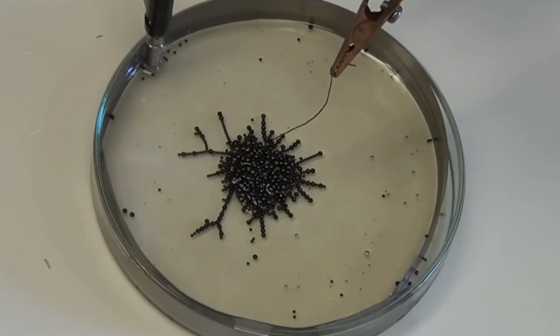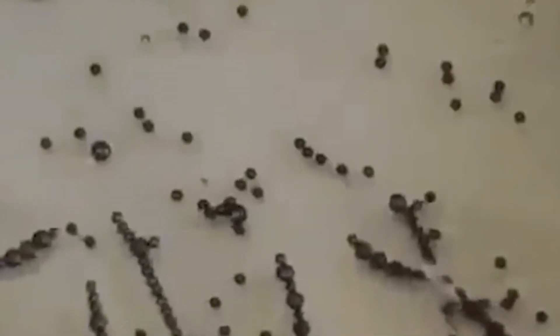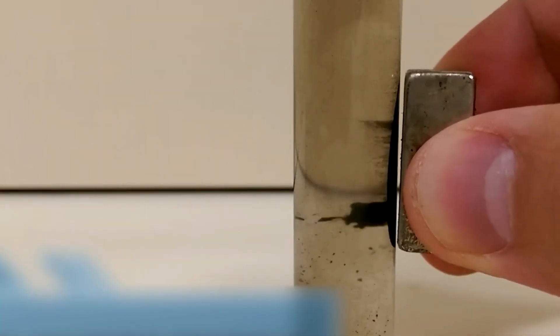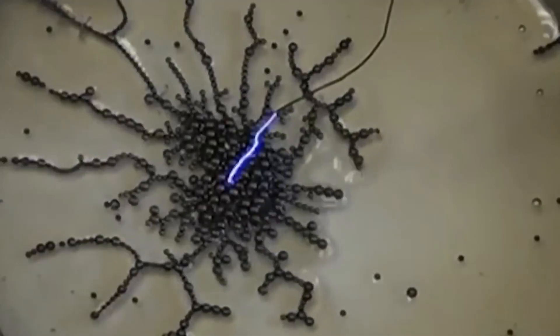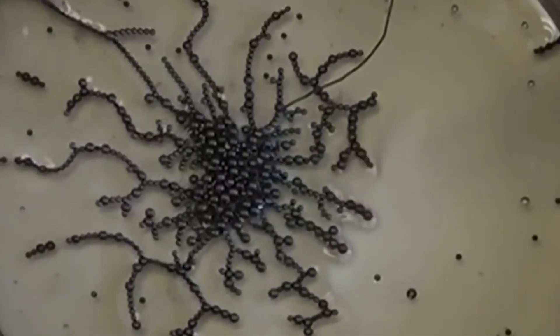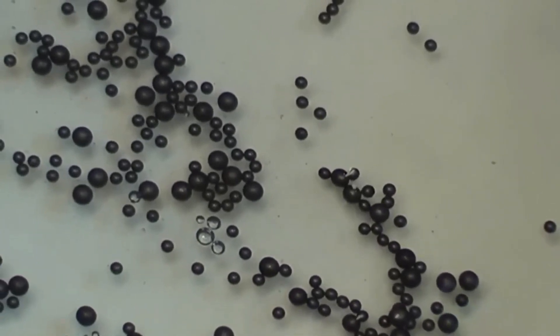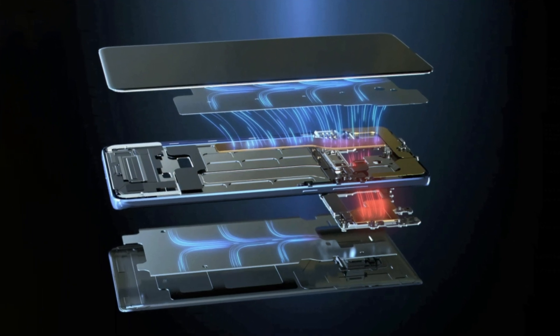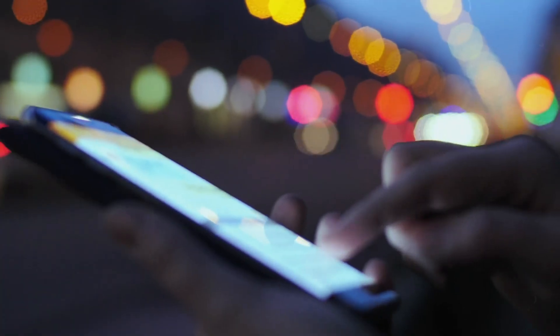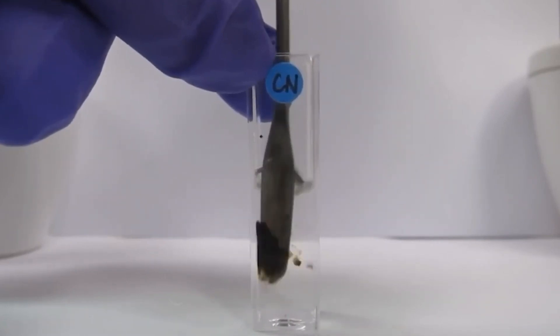Graphene, an extraordinary material, is making waves across various industries. With properties like incredible strength, 200 times stronger than steel, excellent heat and electricity conduction, and the ability to absorb light uniquely, graphene has the potential to revolutionize multiple sectors. From Huawei's graphene film cooling technology in smartphones to Ford's widespread applications, this material is set to transform industries.